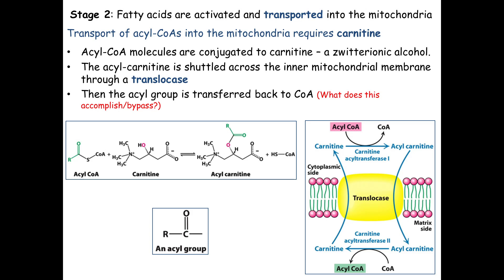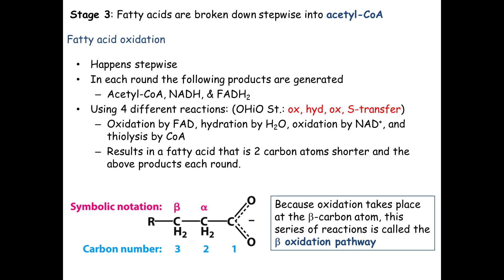So we've transferred the acyl group onto CoA using two ATP equivalents, then onto carnitine to cross the membrane, then back from carnitine onto CoA in the matrix. Now we have an acyl-CoA in the matrix. Everything after this is degrading that acyl-CoA. We do four steps, taking the fatty acid apart two carbons at a time, putting each two-carbon unit onto a CoA as acetyl-CoA. We continue round by round until no carbons remain.